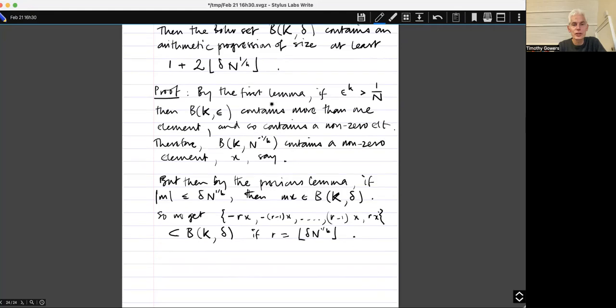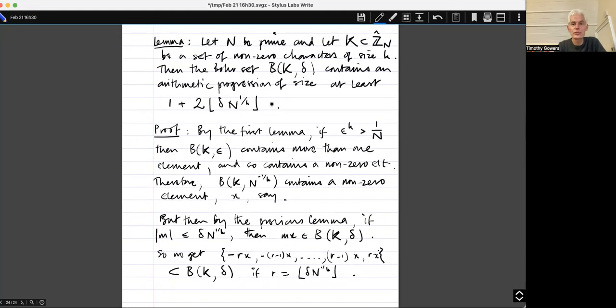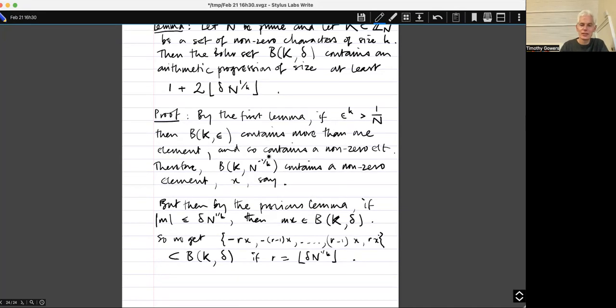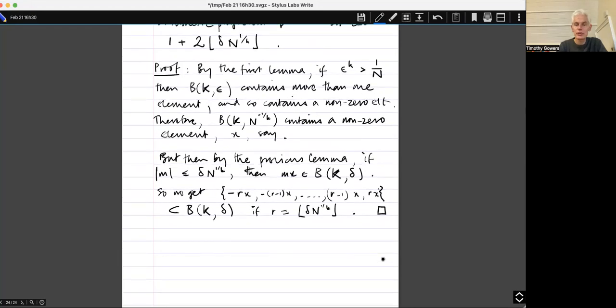I suppose I need some kind of restrictions on, some sort of trivial restrictions on Delta to make sure that this thing isn't actually bigger than N or something like that. But basically for all reasonable choices of parameter, everything works nicely. Okay.